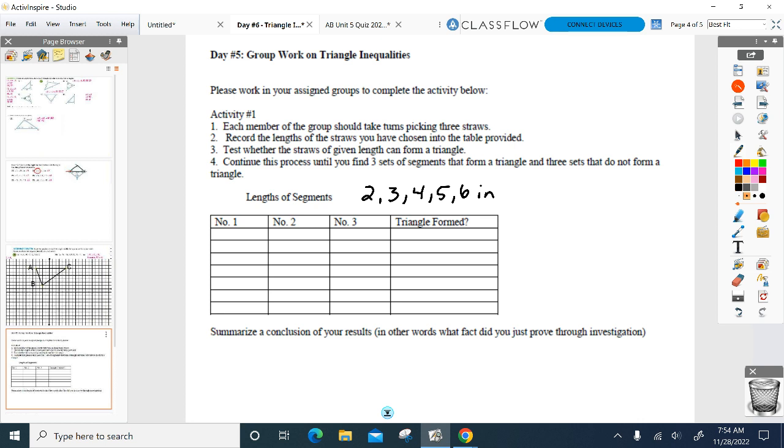Once that's all cut up and ready to go, you're going to select three of them, jot the lengths down, and you're going to see if you can form a triangle with those three lengths. Here's what I mean by form a triangle: all three vertices are touching each other. This would be a no, triangle's not formed.